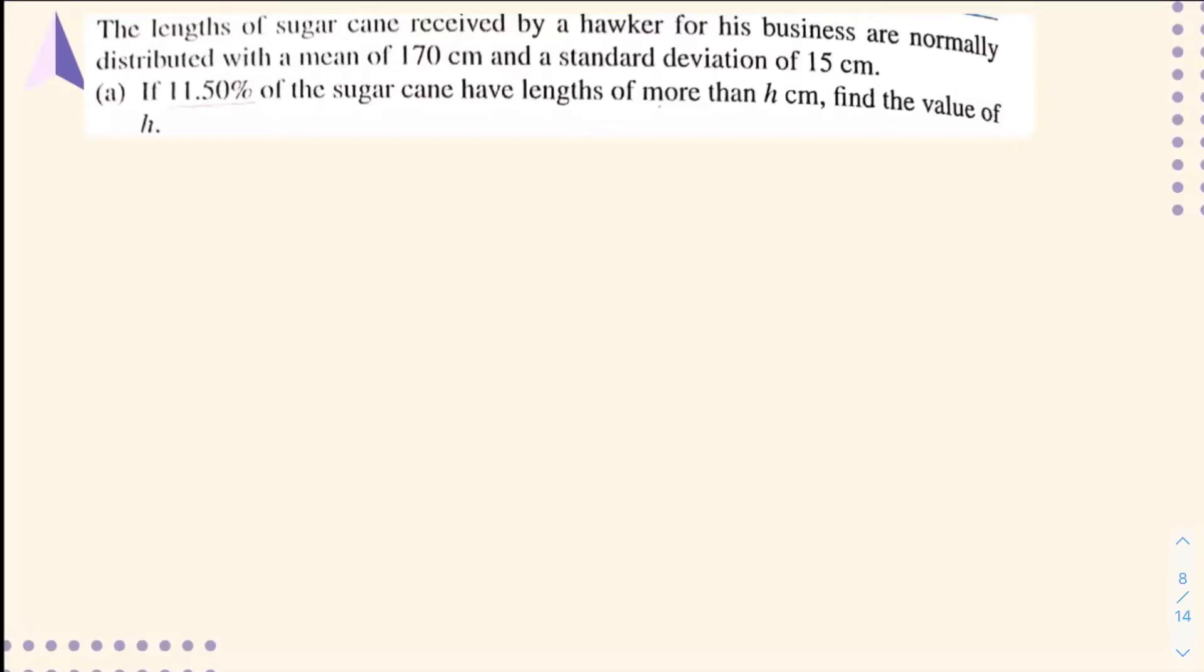In this video, we will discuss example 23 from your textbook about the length of sugar cane received by a hawker for his business. These lengths are normally distributed with a mean of 170 cm and a standard deviation of 15 cm.